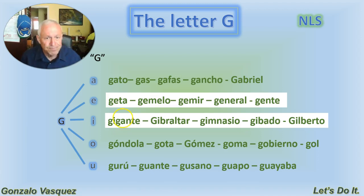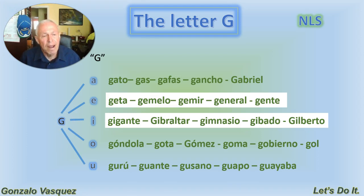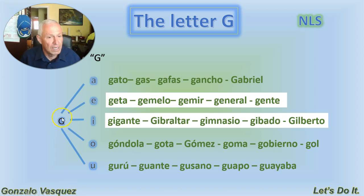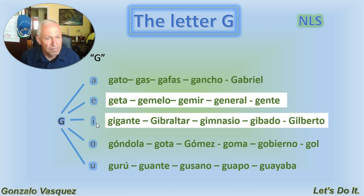Let's do a little review. The name of the letter is G. The primary sound is G — with A: GA, with O: GO, and with U: GU. It acquires the sound of J — jota in español, or H in English — with the letters E and I: GE, GI.